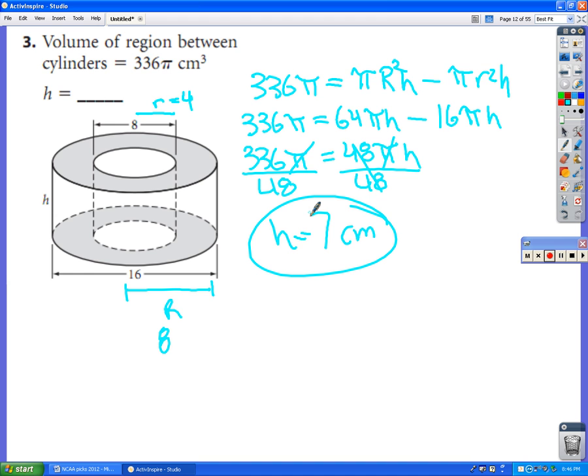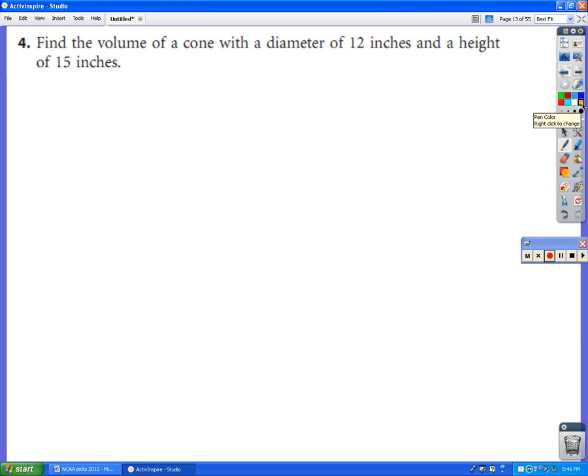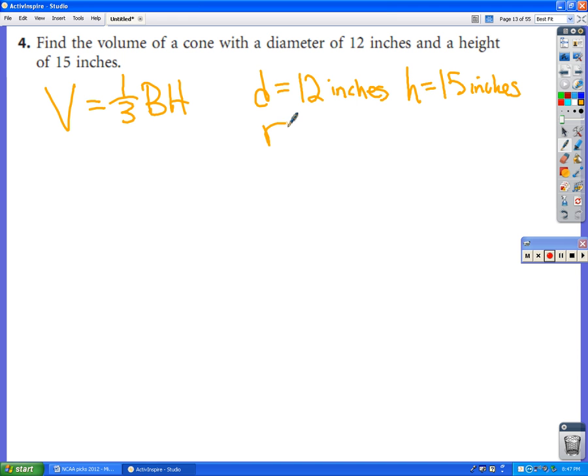Okay, so that does it for all the ones with pictures. Now on the back side, we're going with word problems. So it says find the volume of a cone. Well, we know the formula for the volume of a cone is one-third the area of the base times the height. It says it has a diameter of 12 inches and a height of 15 inches.